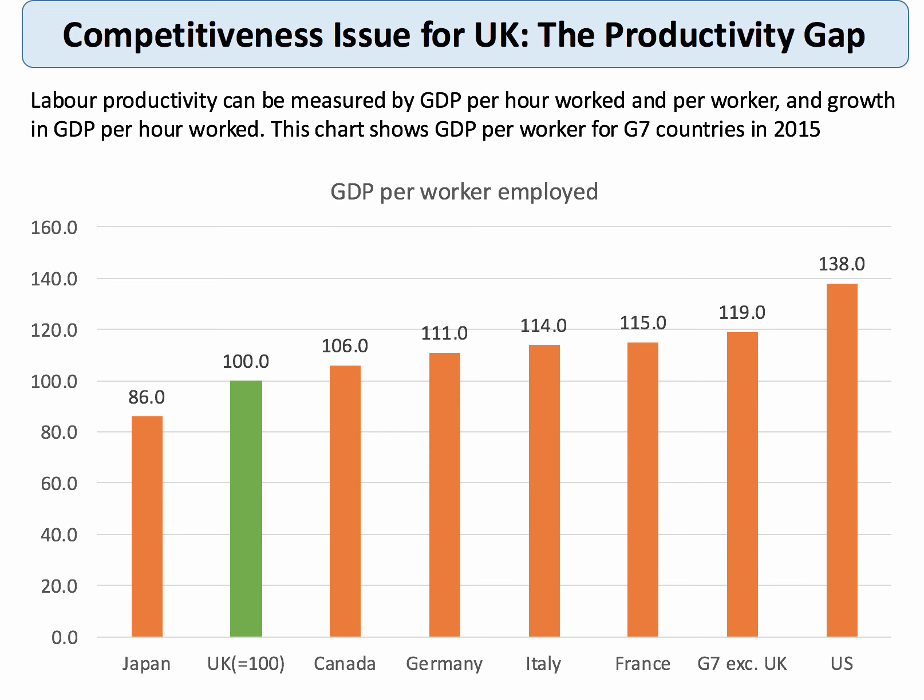So productivity is a measure of efficiency, and one of the big issues in the British economy at the moment is something called the productivity gap. Here's a way of measuring it.